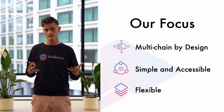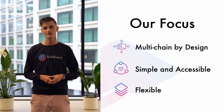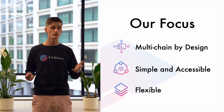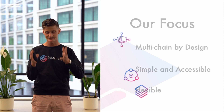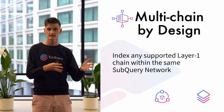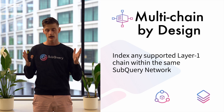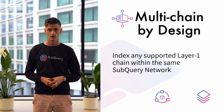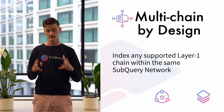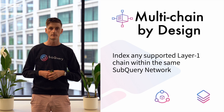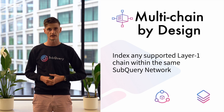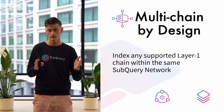Let's consider the three main focus areas when designing the token economic model of the subquery network. The first is that we're multi-chain by design. The subquery network is designed from day one to support indexing projects from any layer one network. Obviously our home is Polkadot, but in the future we're aiming to expand to other layer ones. You can use the same subquery network to index and transact for data from any layer one that subquery supports natively. There won't be multiple subquery networks for each layer one — there will be a single one.